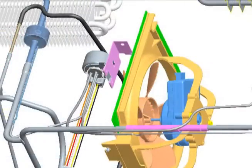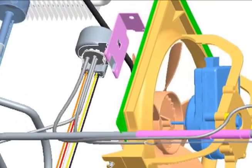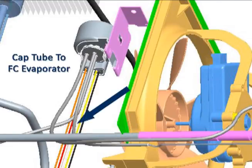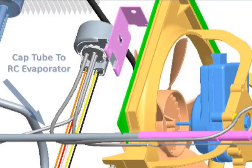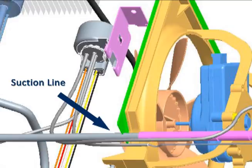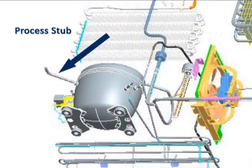The three-way refrigerant valve directs the refrigerant flow. There are two cap tube outputs from the valve: one is connected to the inlet of the freezer evaporator, and the other is connected to the inlet of the refrigerator evaporator. The outlet tubes from the refrigerator and freezer evaporators merge into one suction line that connects to the compressor. The process stub on the compressor is used for servicing the compressor.